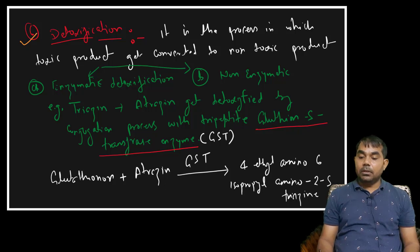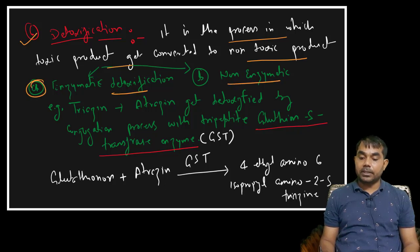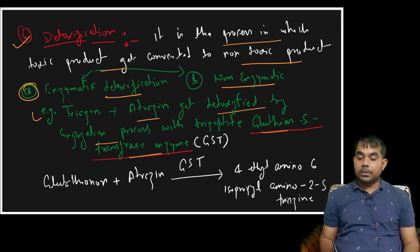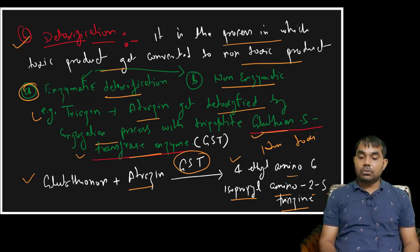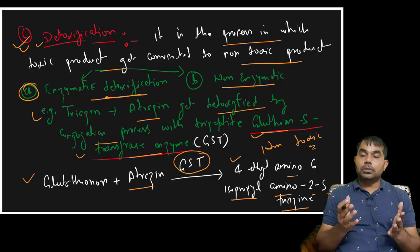Detoxification is the process by which a herbicide gets converted into a non-toxic product. This can be enzymatic or non-enzymatic detoxification. For example, triazine atrazine gets detoxified by conjugation with glutathione via the glutathione S-transferase (GST) enzyme. Glutathione plus atrazine, catalyzed by GST, is converted into 4-ethylamino-6-propylamino-2-S-triazine, which is non-toxic. This is called enzymatic detoxification, and it is one mechanism through which weeds can develop herbicide resistance.